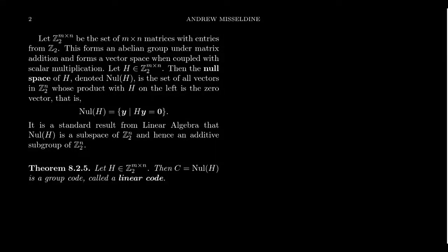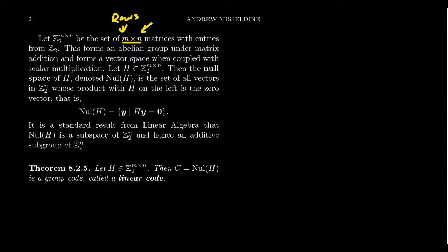Let the set Z2 to the M by N power denote the set of all M by N matrices whose entries come from Z2. Some things to remember: when you have a matrix M by N, the first number always counts the number of rows and the second number counts the number of columns. So an M by N matrix will have M many rows and N many columns — it's reverse alphabetical order.